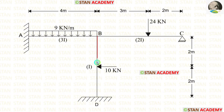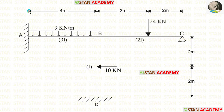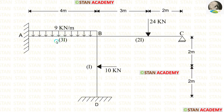In the vertical member BD, we have a point load of 10 kN acting at the center. The length of AB is 4 meters and the length of BC is 5 meters. The moment of inertia for AB is 3i, for BC is 2i, and for BD is i.